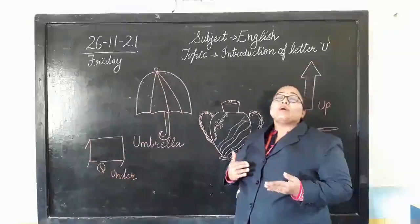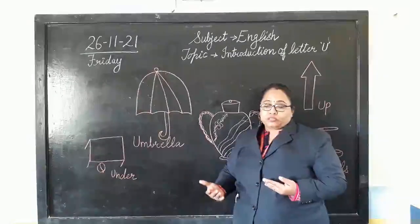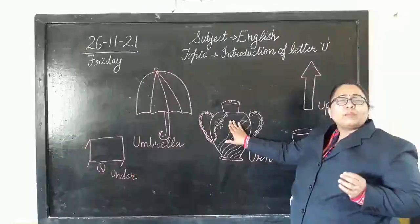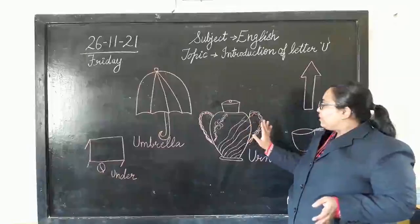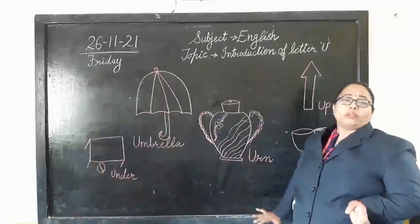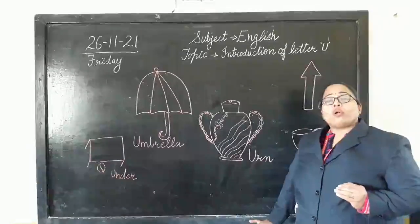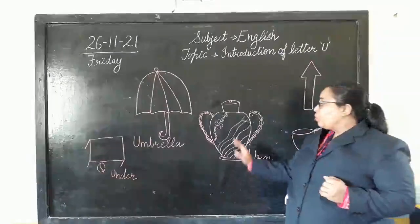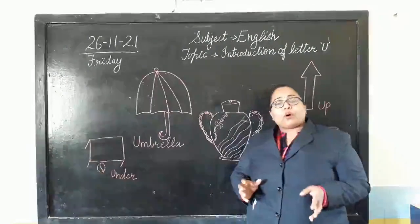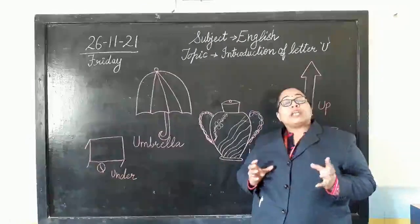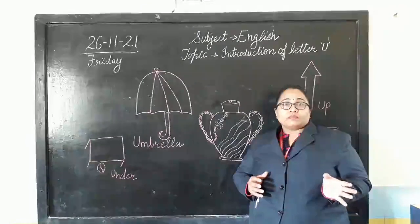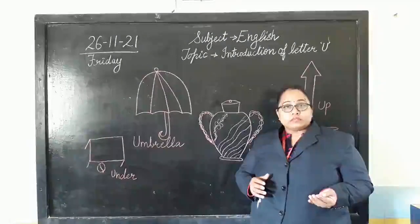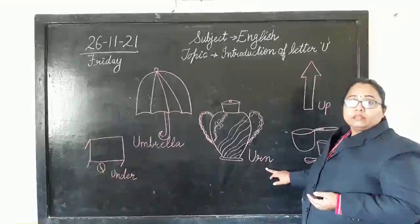Let's look at a few more pictures from the book. What is this? It's something like a pot — a nicely decorated pot. It is called an urn. It's a fancy pot we use for decorating our house. We call it an urn.